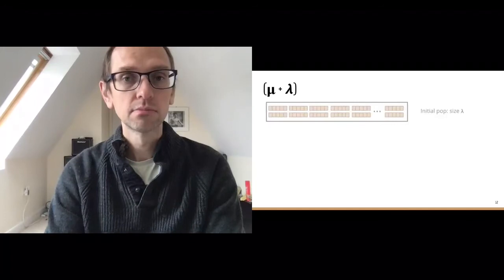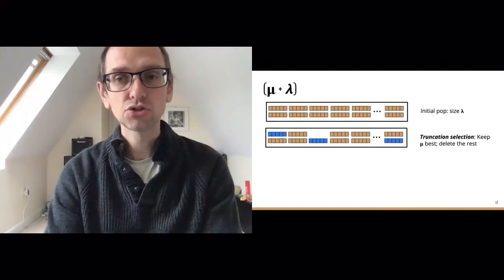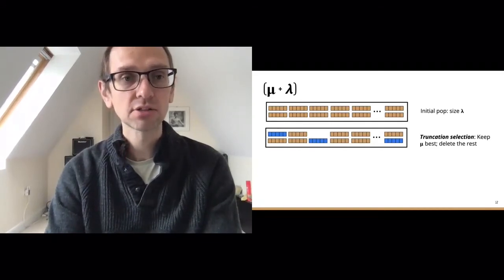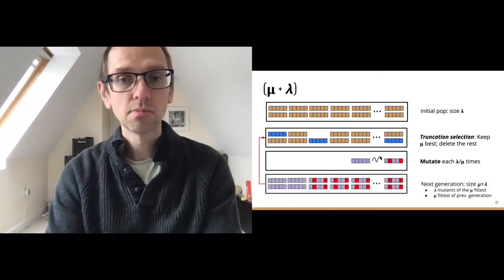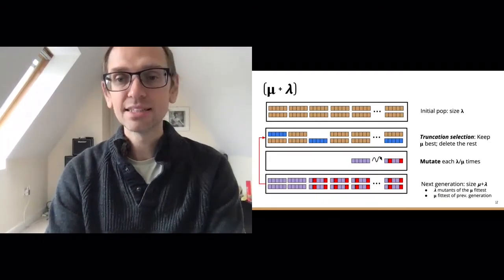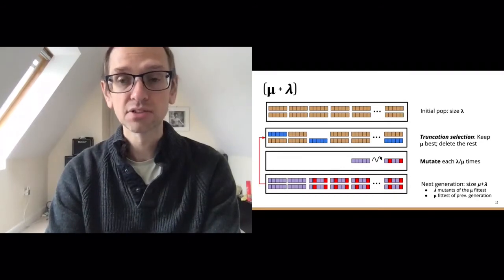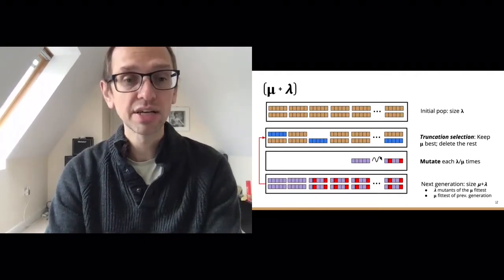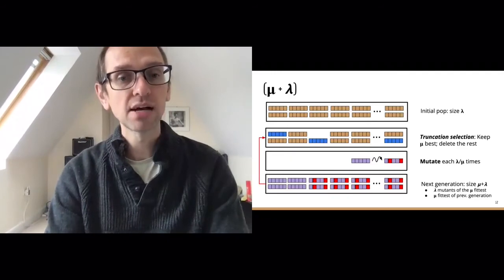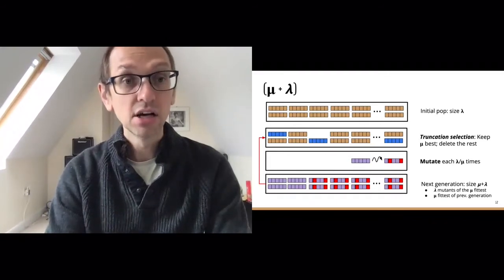Mu-plus-lambda is very similar. We start with an initial population of size lambda and again use truncation selection — keeping the mu best and deleting the rest. We use mutation, but the difference is in the next generation. Mu-plus-lambda brings in elitism: the next generation is of size mu plus lambda. You have lambda mutants of the mu fittest, but you also keep the mu fittest from the previous generation — passing the best solutions down through the generations. You iterate again until you run out of time.